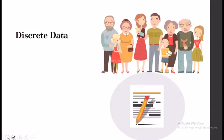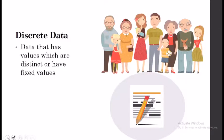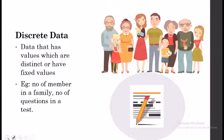Here I have given a picture of family members as an example of discrete data — that is, the number of members in a family. I have also given a picture of a paper with a pen and pencil, representing the number of questions in a test. Discrete data is defined as data that has values which are distinct or have fixed values. Examples include the number of members in your family and the number of questions in a test paper.